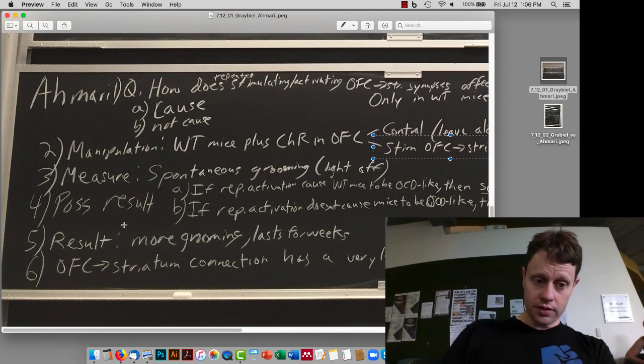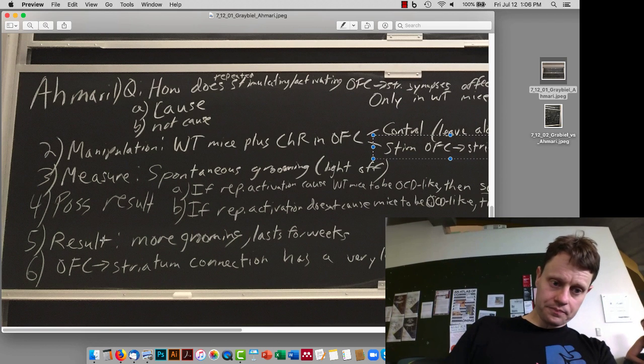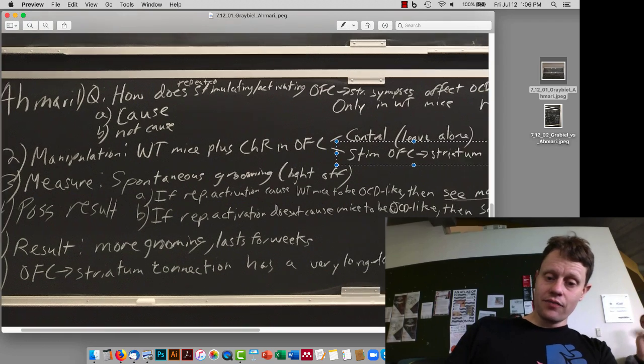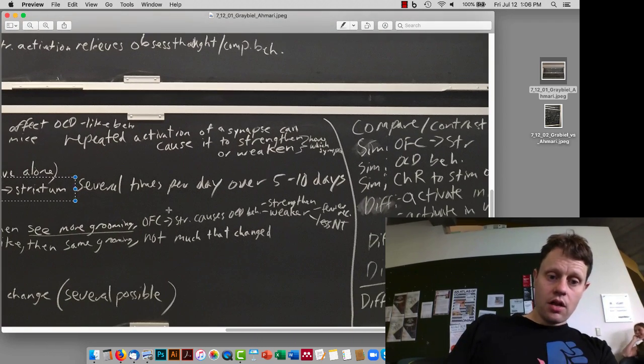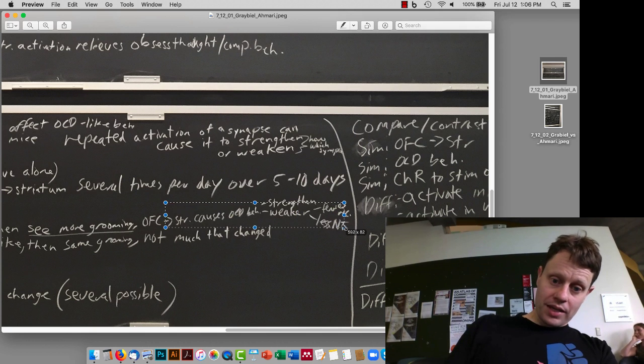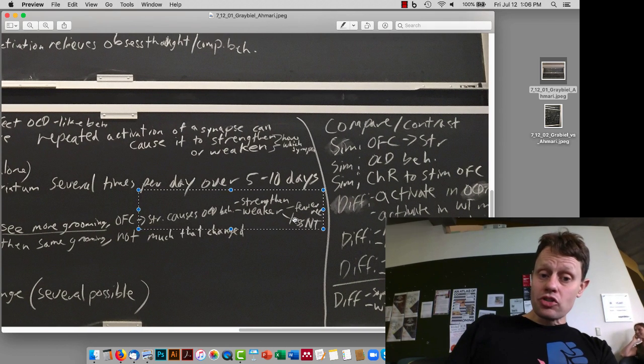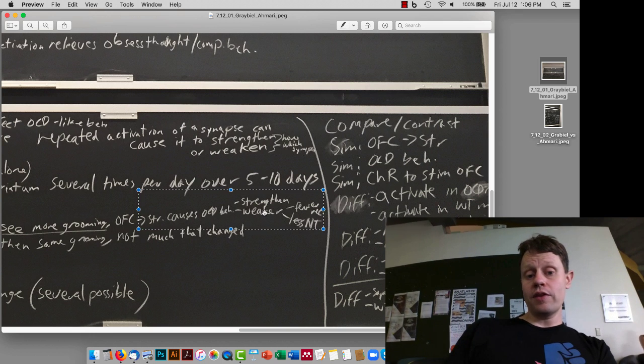Our result, when we do the experiment, is we see more grooming, and that lasts for many weeks. And so our conclusion is the OFC to striatum connection has a very long-lasting change, and that change causes OCD-like behavior. Causes OCD-like behavior, maybe strengthens the synapse, maybe weakens the synapse, maybe more or less neurotransmitters, a lot of follow-up work has been going on to try and figure out what is going on with this.